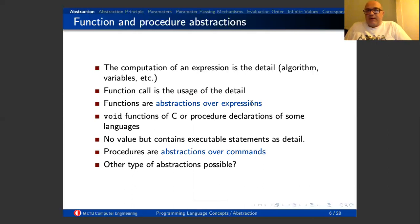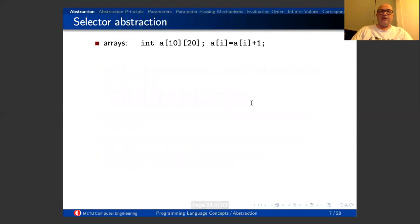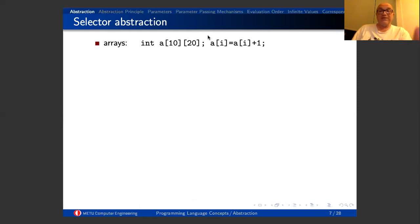Are there other types of abstraction beyond functions and procedures? Yes — for different entities of a programming language, we can create different abstractions. Here comes the selector abstraction. If you define a composite data type like an array or structure, you select the members. Array selection is simple: you provide an index value and the array returns the content at that index. Programming languages provide ways for users to define their own selectors.